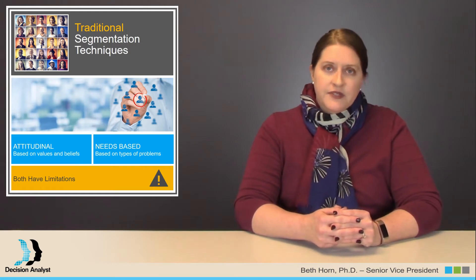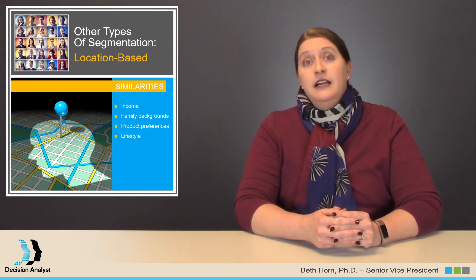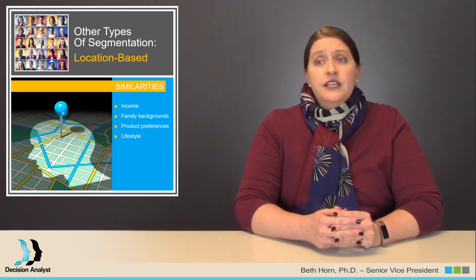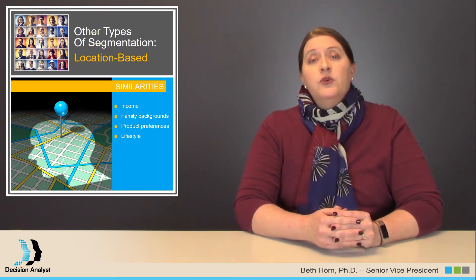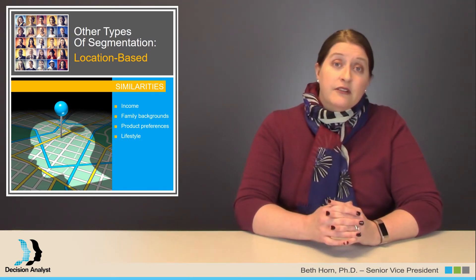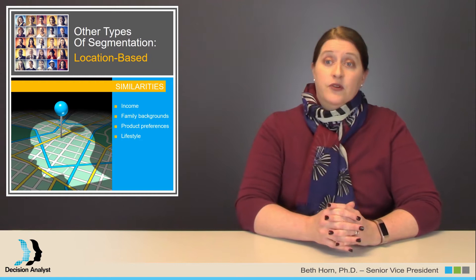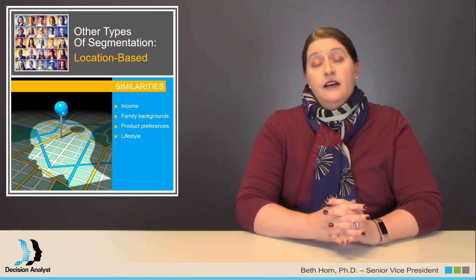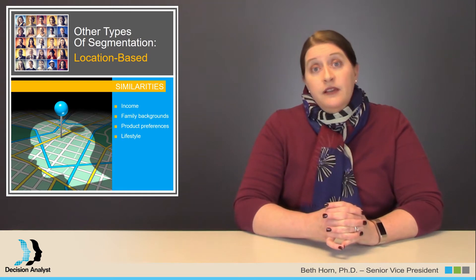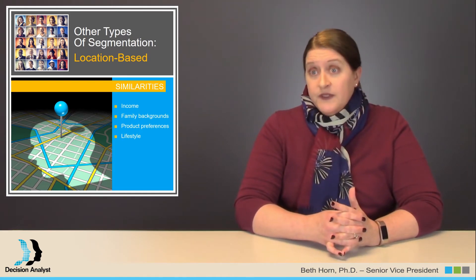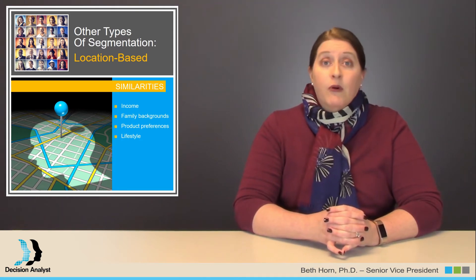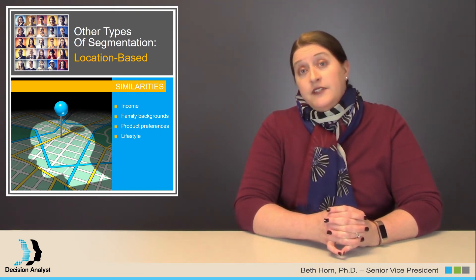So other segmentation types have evolved, such as location-based segments. This type of segmentation is based on the premise that people who live in the same neighborhood share more similarities to one another than people who live in other neighborhoods. This is the idea of birds of a feather flock together — people who live near one another usually have similar incomes and family backgrounds, and they also have similar product and lifestyle preferences.